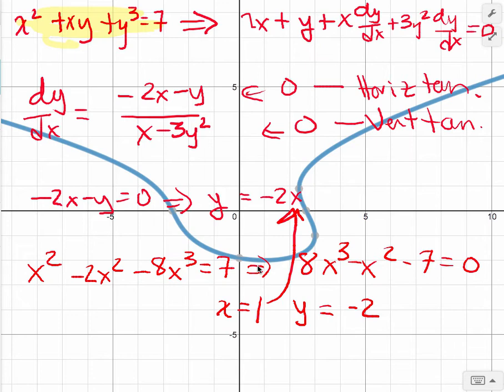And if I put in the line y equals negative 2x, what we've really said is the horizontal tangent has to lie on the line y equals negative 2x, which is this purple line.